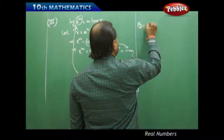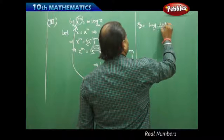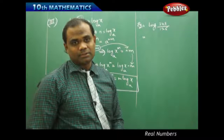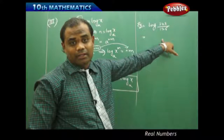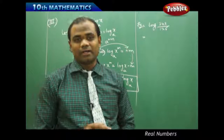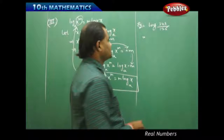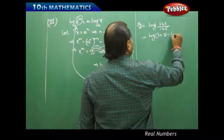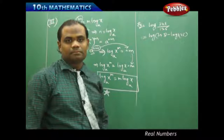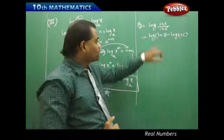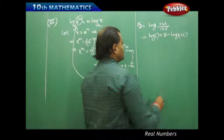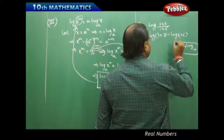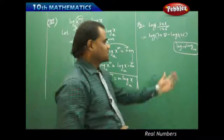So when I want to find log of 343 divided by 125, I use some of the properties here. Clearly this is in the form x divided by y, so the second law of logarithm says log(x/y) equals log x minus log y. Therefore this can immediately be written as log 343 minus log 125. One important thing here is that there is no base given, so when there is no base given we understand this is log to the base 10.